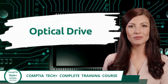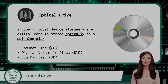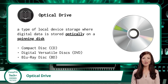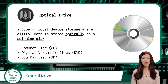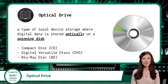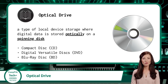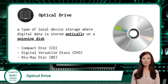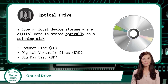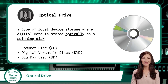Optical Drive. An optical drive is a type of local device storage where digital data is stored optically on a spinning disk. Optical drives are classified based on the type of optical disks they can read and write to. The three main types of optical disks are CDs or compact disks, DVDs or digital versatile disks, and Blu-ray disks.